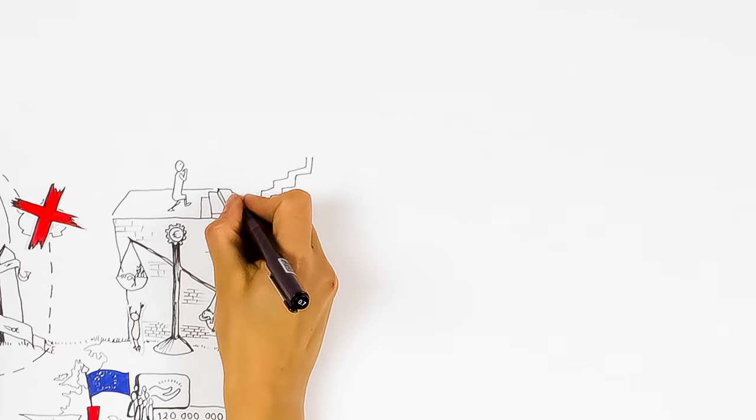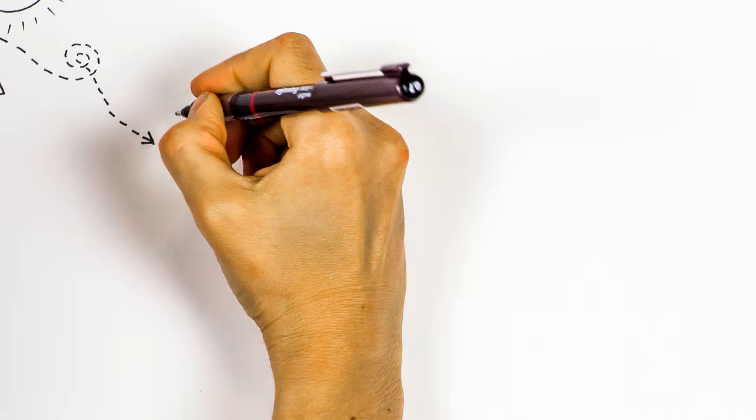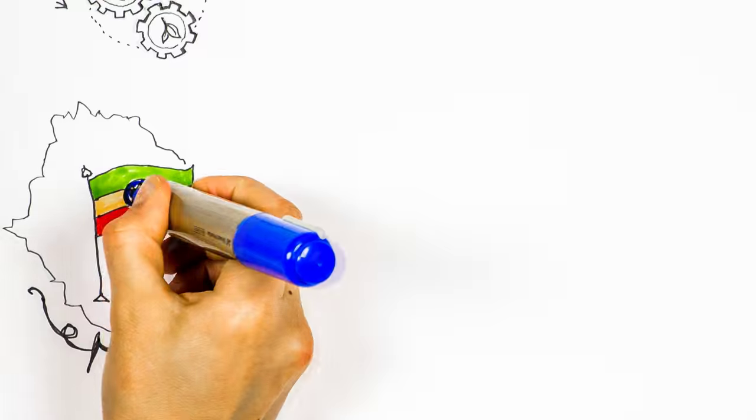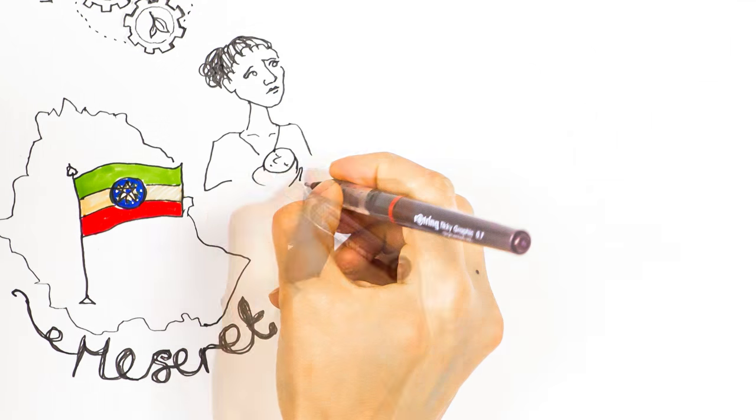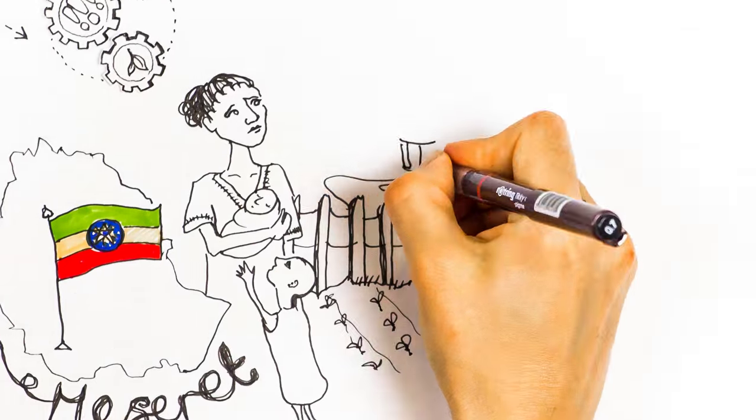But something is changing. People want economies that prioritize human and environmental needs. In Ethiopia, Mesret and her family were struggling to survive on their farm. She joined a saving and credit co-operative, saving a few cents a week.